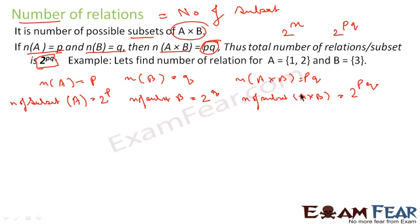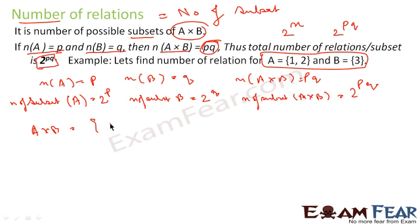Let's take an example: A = {1, 2} and B = {3}. So A cross B is {(1,3), (2,3)} — two elements only. Number of elements in A is 2, in B is 1, so A cross B has 2×1 = 2 elements. Now let's find the number of subsets of A cross B.